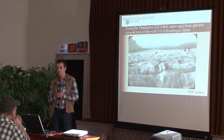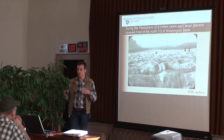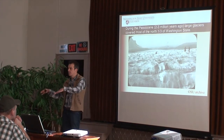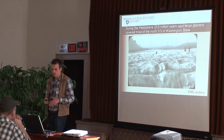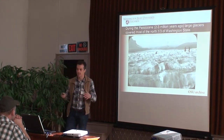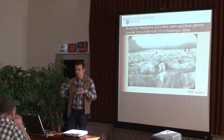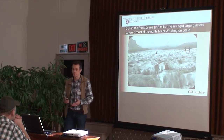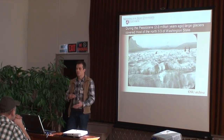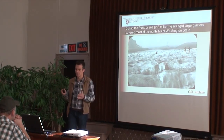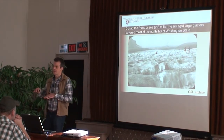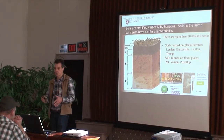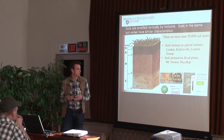During the Pleistocene period, two to three million years ago, which ended about the last glacial maximum around 10,000 to 12,000 years ago — really not that long ago — glaciers covered most of the northern one-third of Washington state. As these glaciers receded, they left residual glacial outwash, combined with some volcanic activity and the rivers that came through those areas, creating the parent material that soils began to form on. The most specific form of talking about soil is a series.